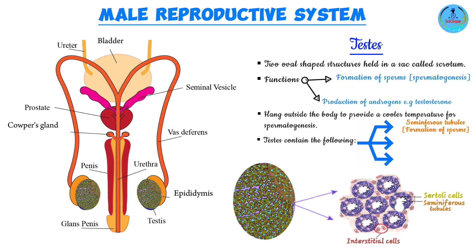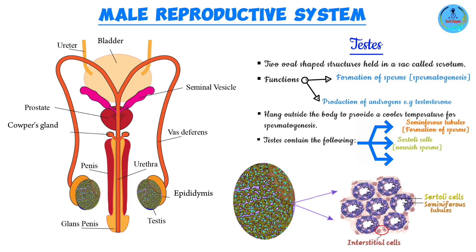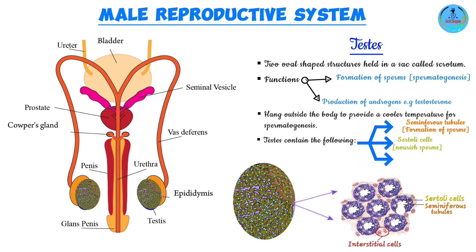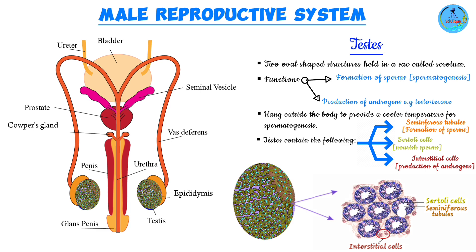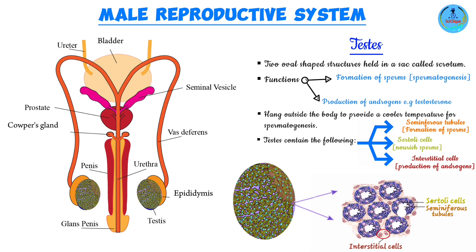We also have Sertoli cells, which nourish the sperm by providing the necessary nutrients. Then there are interstitial cells, which surround the seminiferous tubules and are responsible for the production of the androgens, the most important of which is testosterone. To clarify: it is the seminiferous tubules that form the sperm, and it is the interstitial cells that are responsible for the formation of the male androgens.